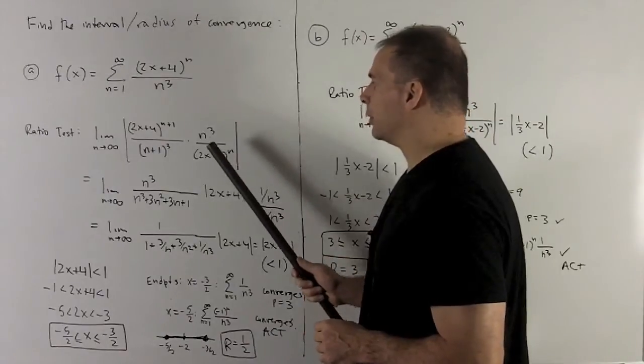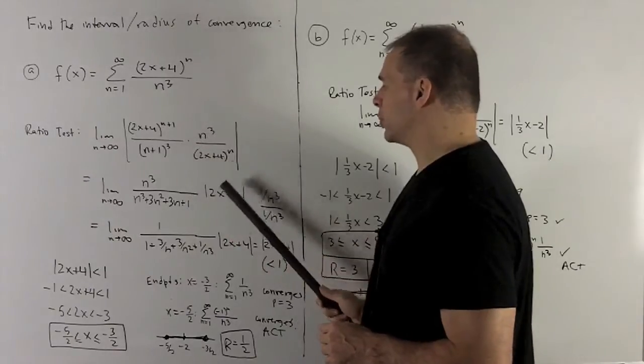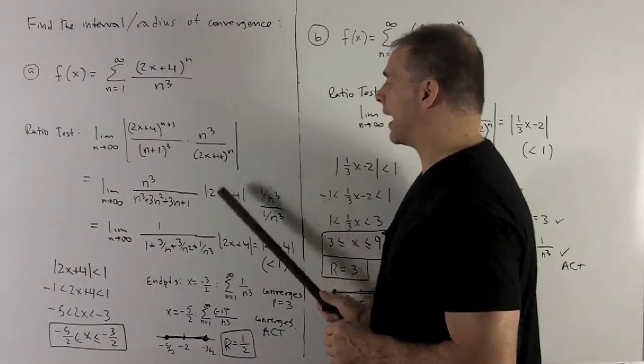Alright, so what will happen? We have our 2x plus 4 to the n plus 1 over 2x plus 4 to the n. That's going to collapse to a 2x plus 4 in absolute values.